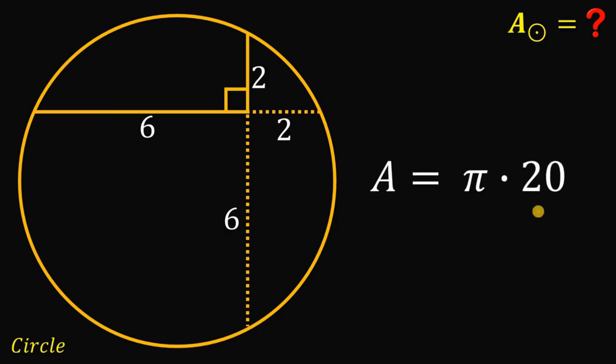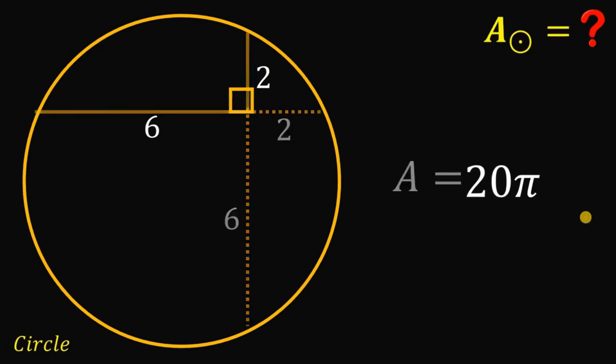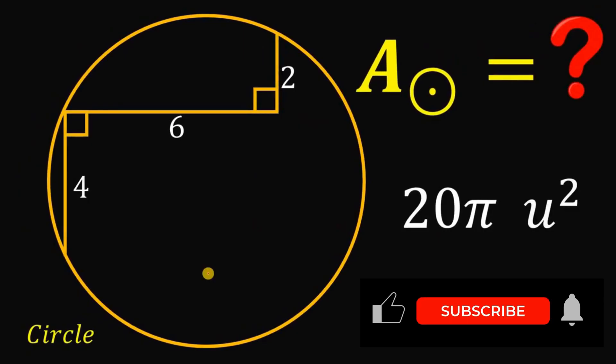the area of this circle must be equal to 20 times pi or simply 20 pi. Therefore our answer to this question given this figure and what is the area, our answer must be equal to 20 pi square units and as always we are done.